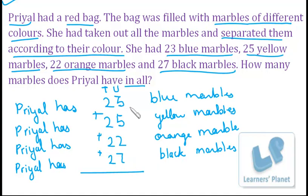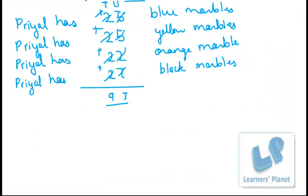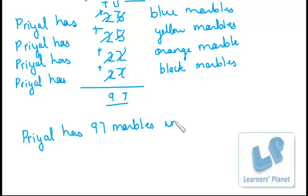Now we'll write tens and units and add them all together. First we'll add the units: seven plus three makes ten. Ten plus five is fifteen. Fifteen plus two is seventeen. So seven is written and one is carried. For the tens: two plus two is four, plus two is six, plus two is eight, plus one carried is nine. So she has a total of ninety-seven marbles. Priyal has ninety-seven marbles in all. Our final statement and answer is ninety-seven marbles.